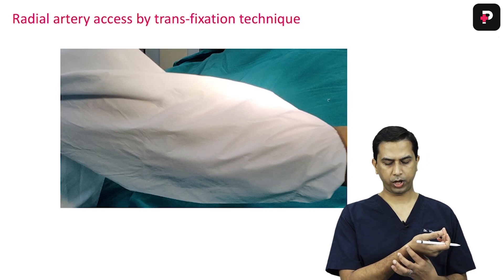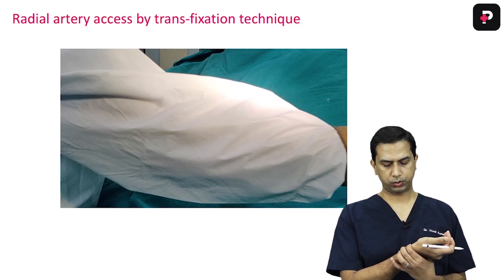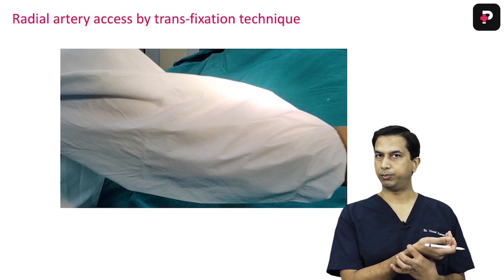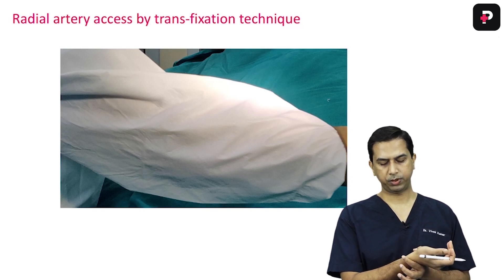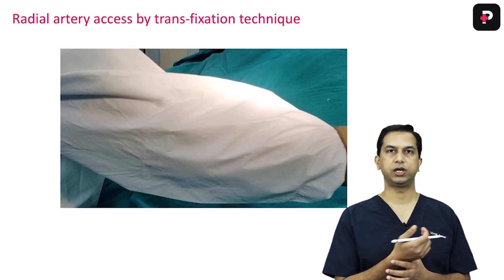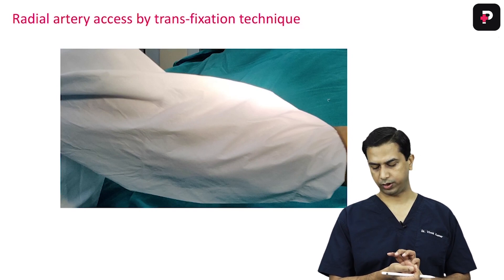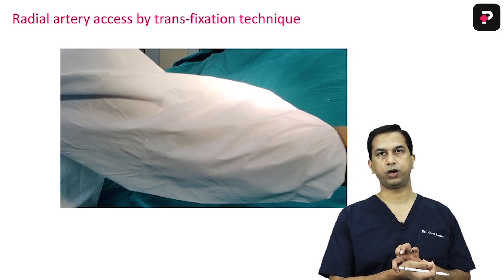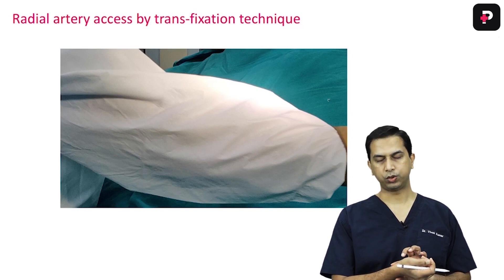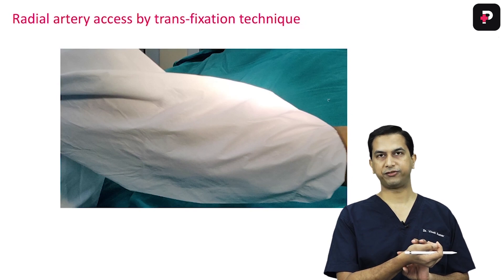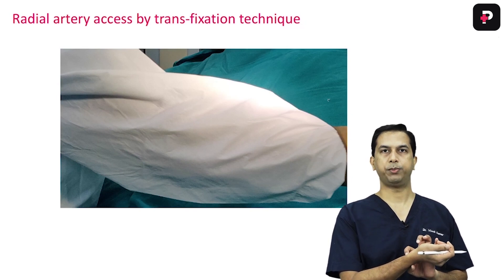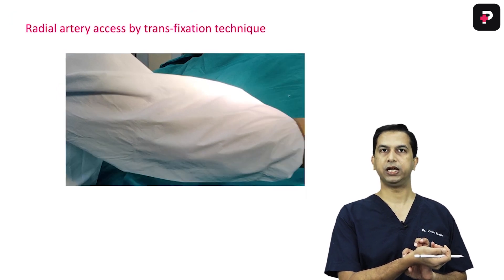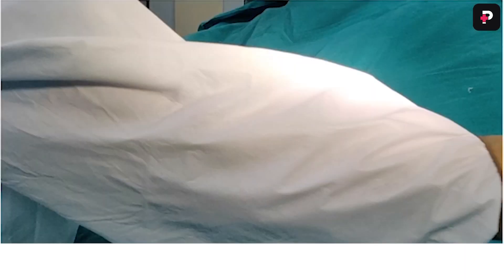You choose a point which is about one finger below the styloid process. Some people prefer to use the hand arteries, but I prefer to use the styloid process as a marker and go down about one and a half centimeters below it. That is the point where you should assess for the radial artery pulsation.